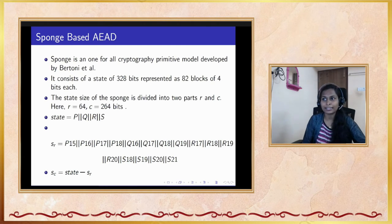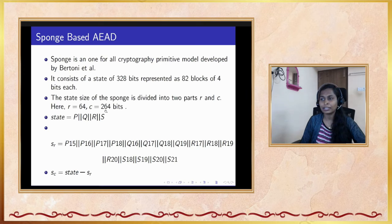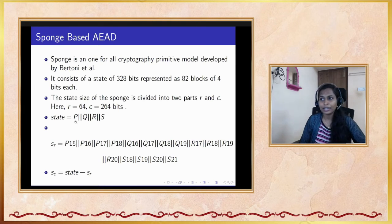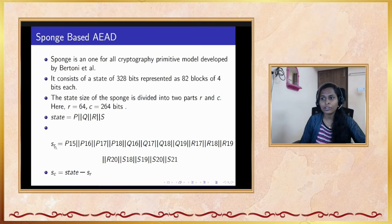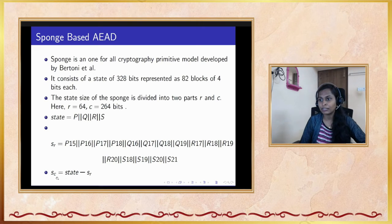We proposed PANTHER: a sponge-based lightweight authenticated encryption scheme. We chose the sponge construction because it is a versatile cryptographic primitive by Bertoni et al., useful for different cryptographic primitive creation. In the NIST competition, 10-20 papers have used sponge constructions. Our sponge has a finite state of 328 bits, divided into 82 blocks of 4 bits each. This state is divided into rate (64 bits) and capacity (264 bits). The state is constructed using four NLFSRs (P, Q, R, S). Instead of taking rate bits sequentially, we take the last four blocks of each NLFSR as the combined 64-bit rate.